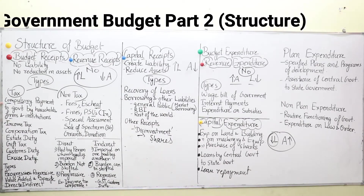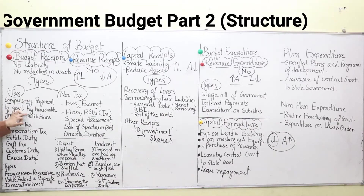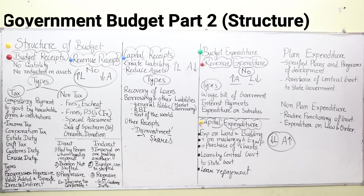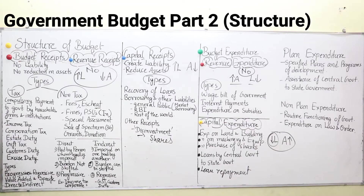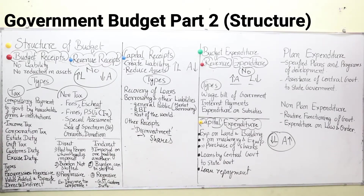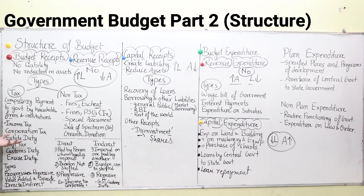What is tax? Tax is a compulsory payment to the government by households, firms, and institutions. It is compulsory because if the government levies tax on any particular individual, he is bound to pay. For example, if income tax is levied on me by the government, I will have to pay that tax. Who pays them? Households — people like us — pay them; firms, that means factories or production units, pay them; and institutions or any organizations pay them. Now, what are the different examples of tax?